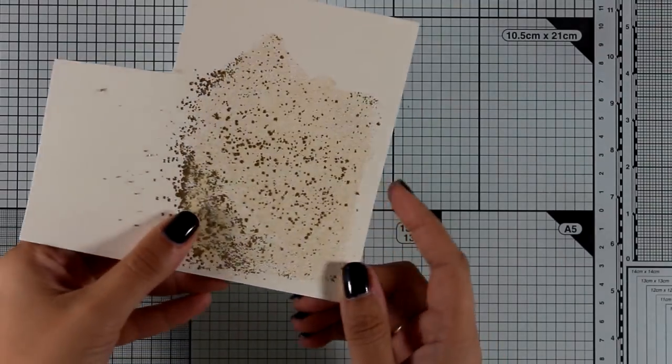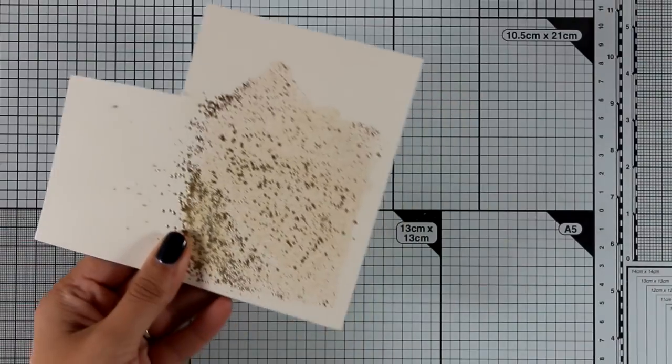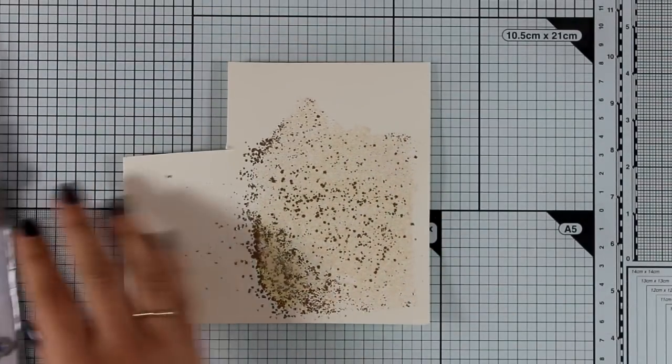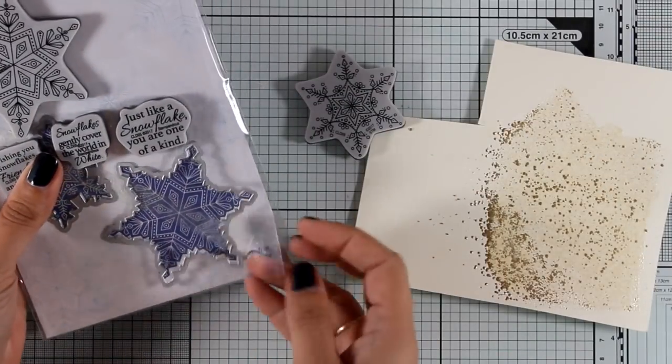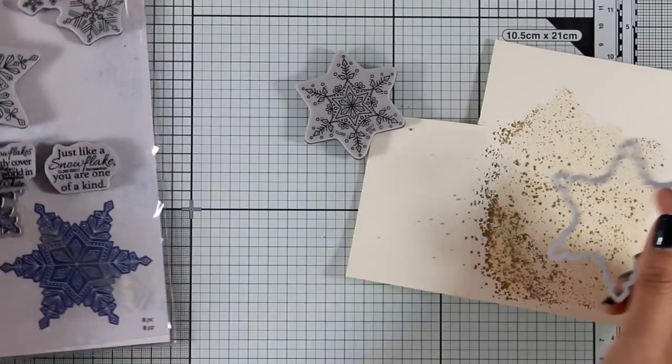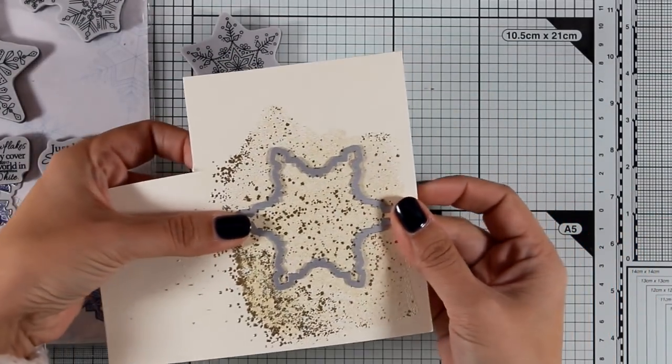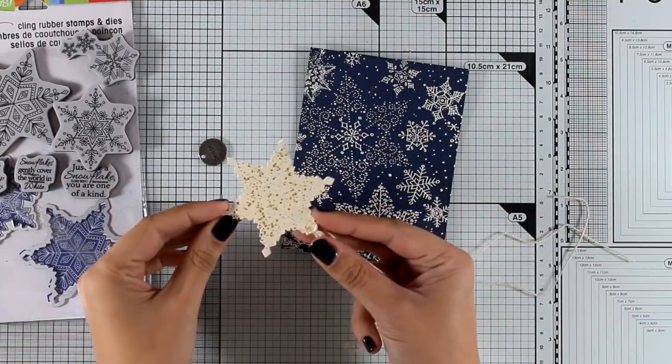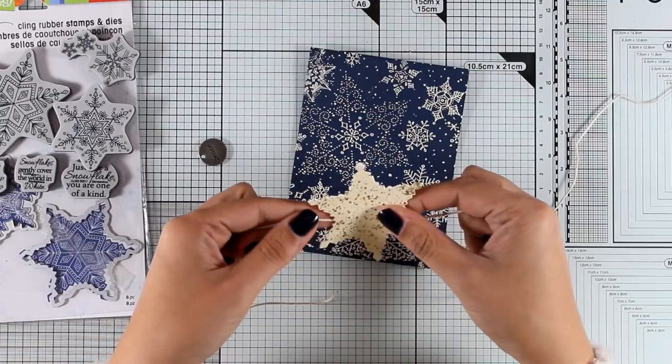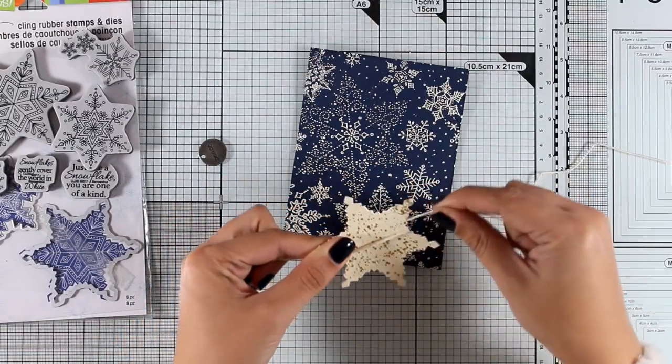And here is the finished result, just gorgeous in real life. I hope you can see all the shine and the sparkle that I get from the golden particles. And now I need to create a focal point for the top of my card, and for that I will be using this stamp set. This is a gorgeous stamp set with beautiful snowflakes, a couple of sentiments, as well as two dies. So I really love when dies come together with the stamps because it really makes my life easier since I always like to cut out my images, my focal points, and pop them on my cards.